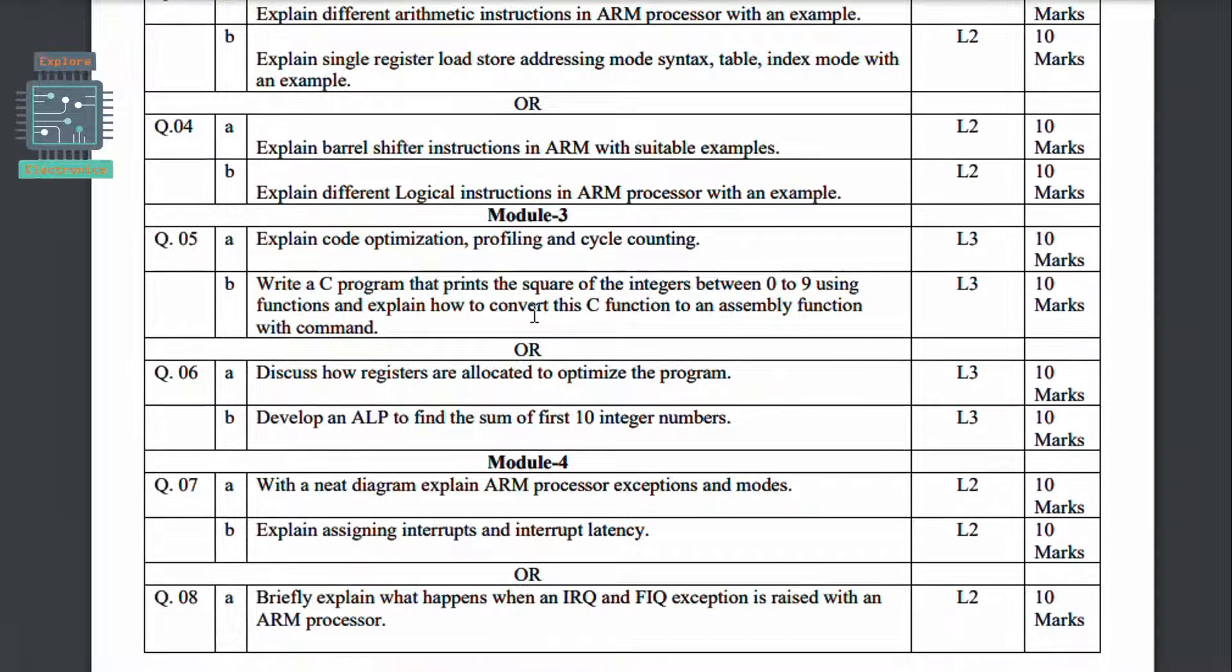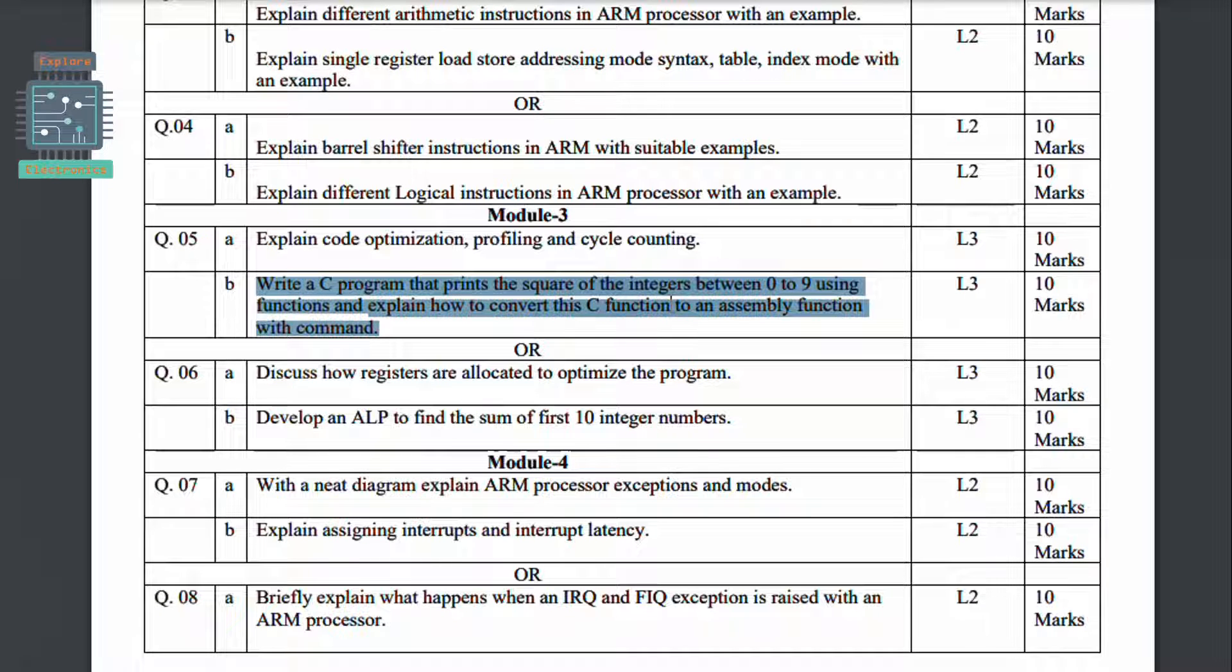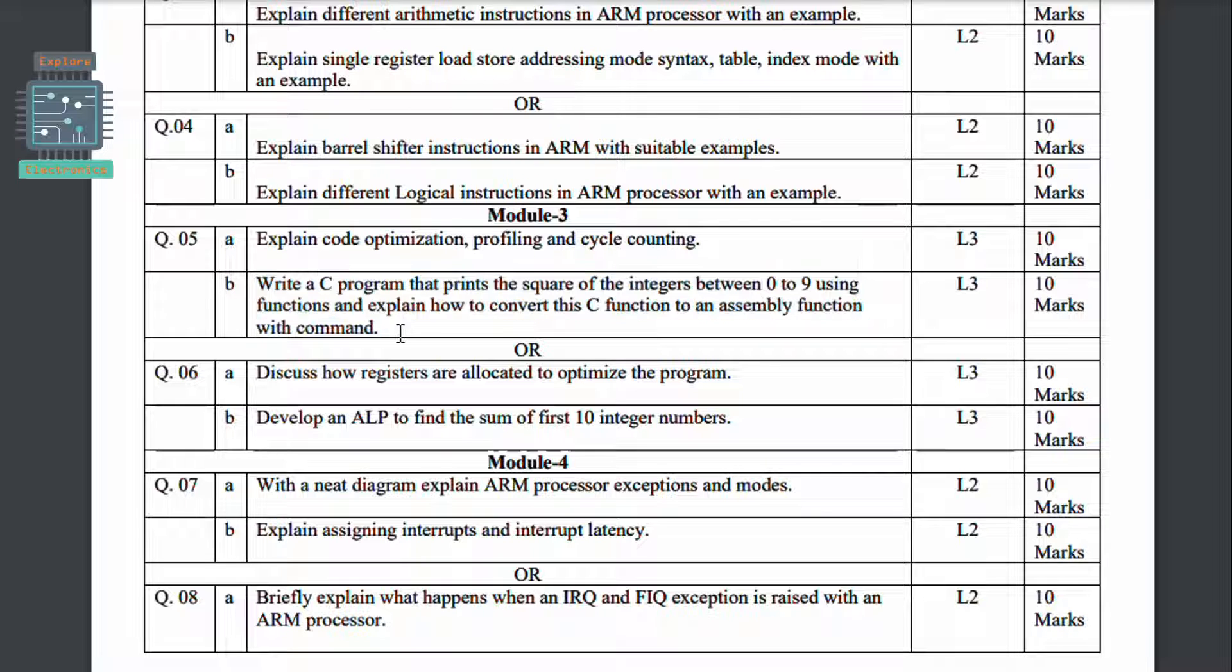Then Module 3, explain code optimization, profiling and cycle counting. This is Module 3 question asked for 10 marks. And write a C program that prints the square of integers between 0 to 9 using functions and explain how to convert this C function to an assembly function with a command.